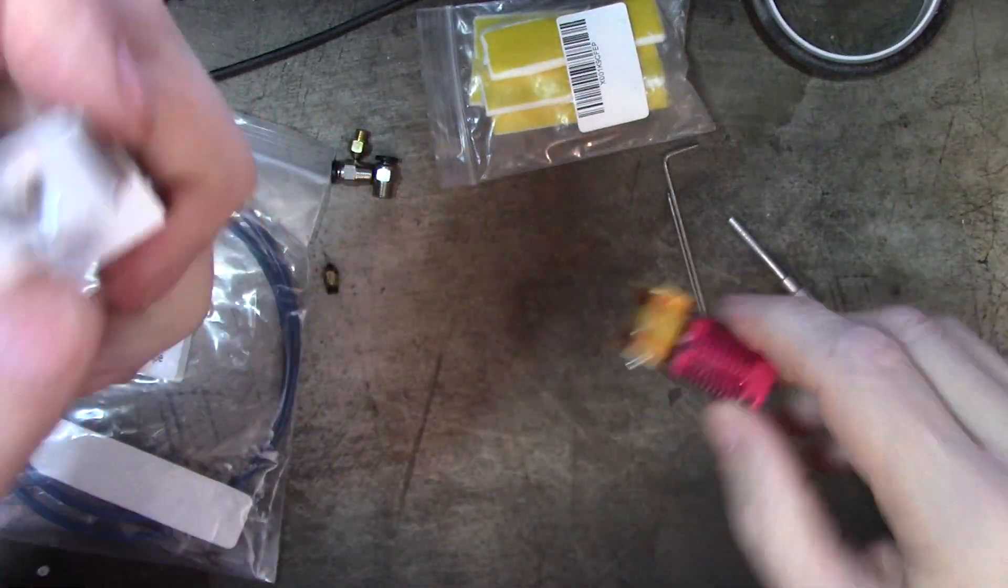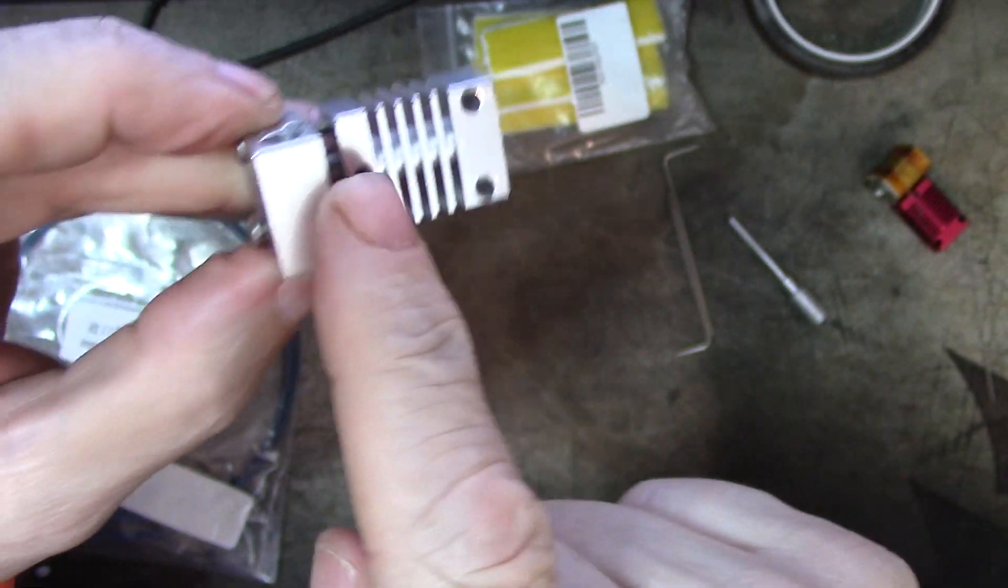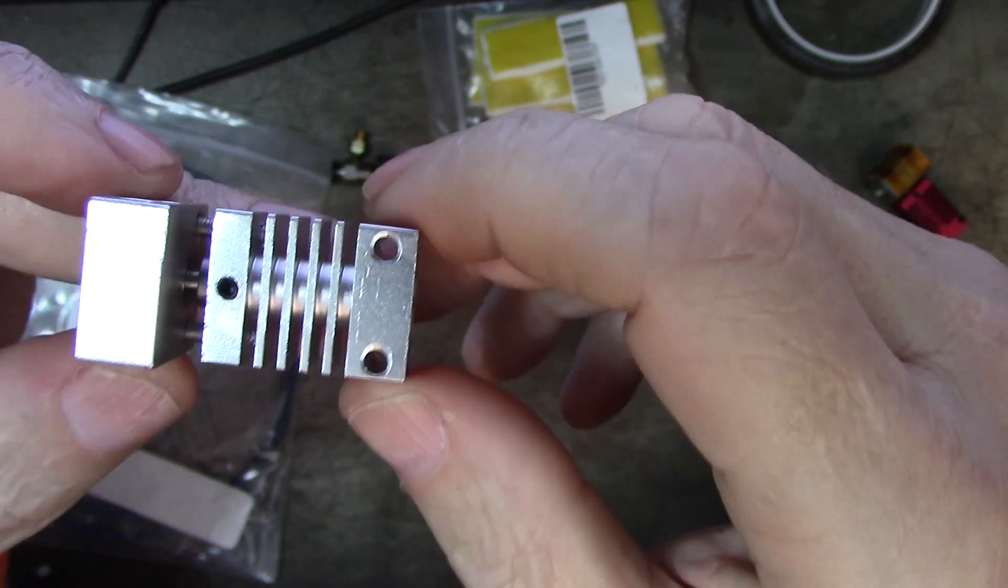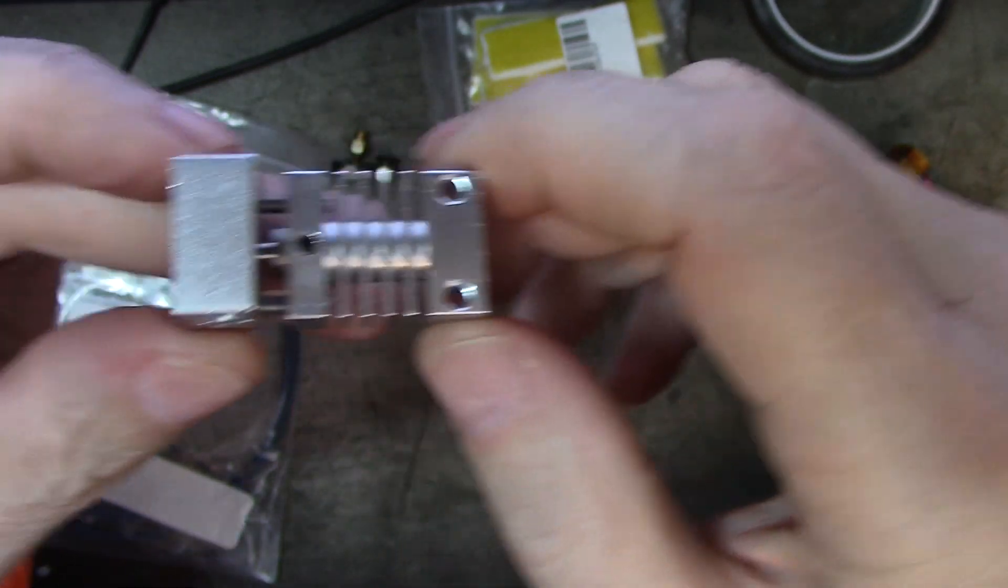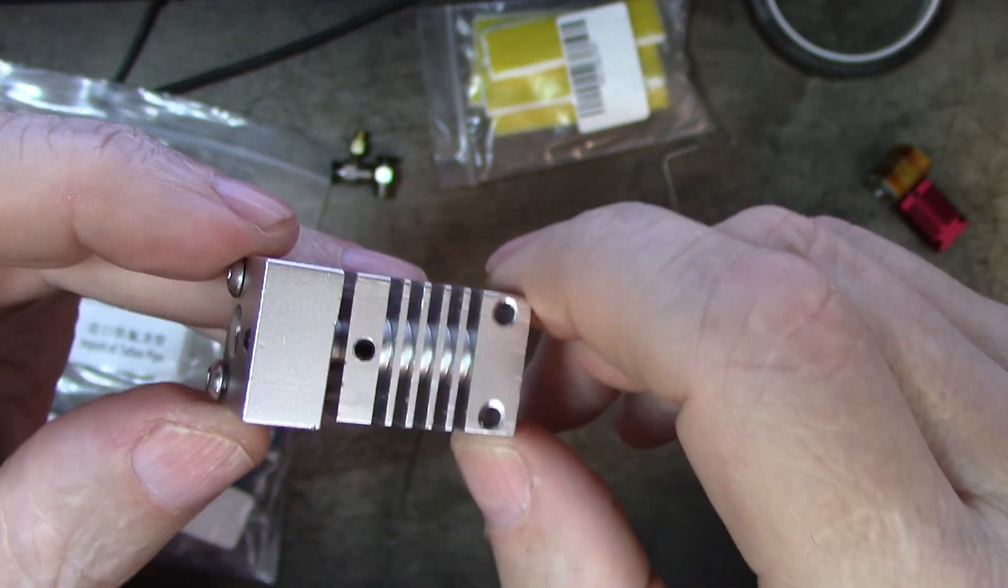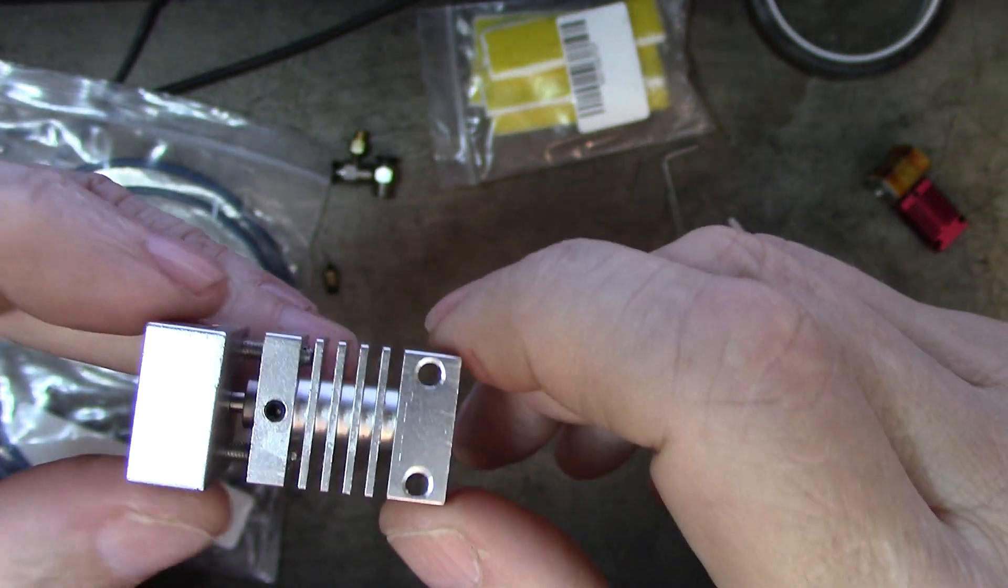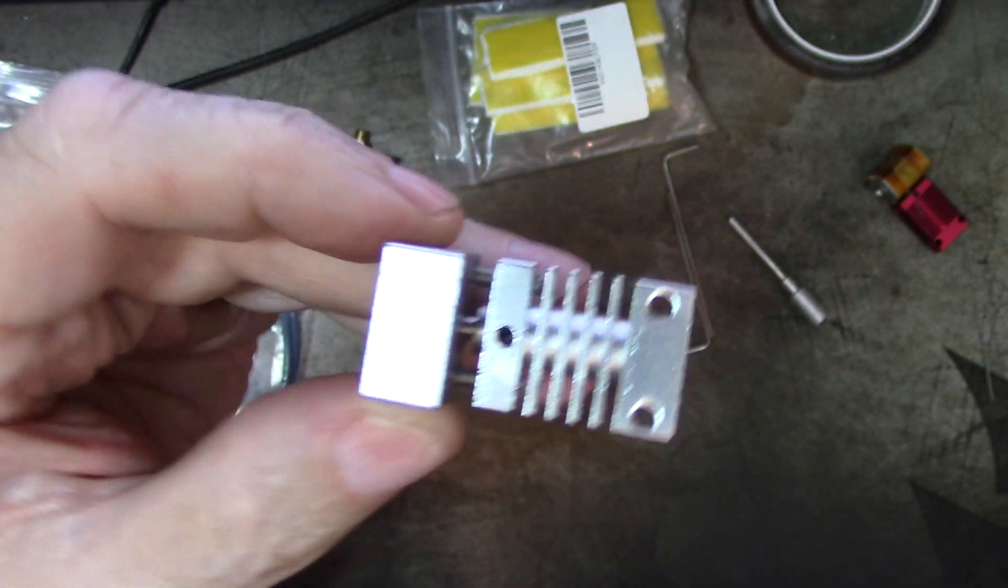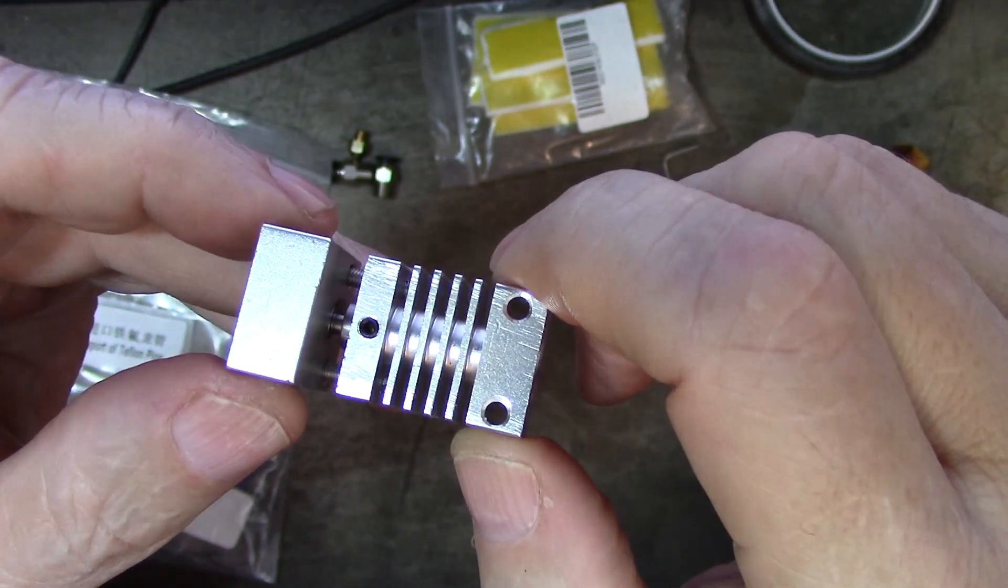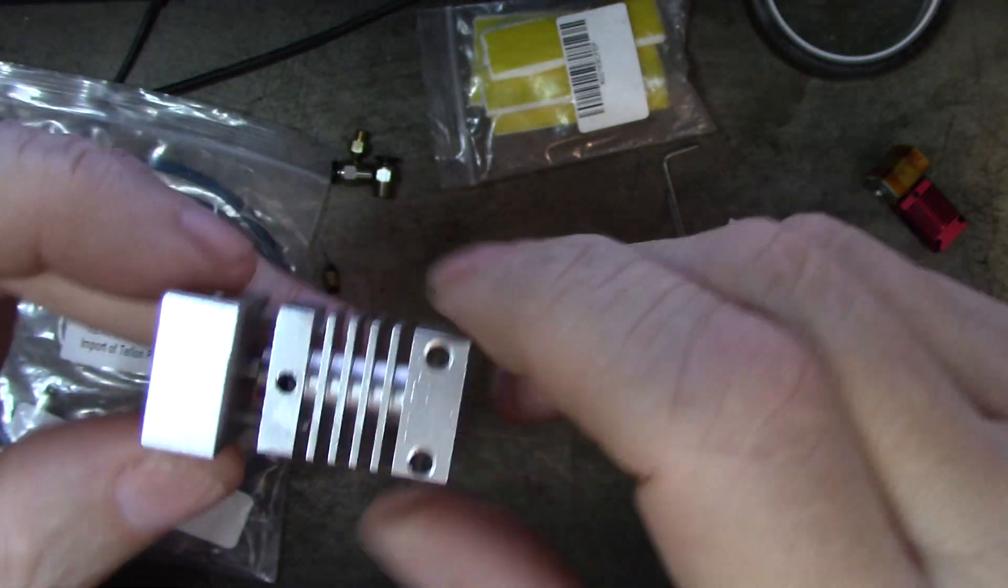So because this one does not have any Teflon tube down its full length, that means you don't have that super slick surface of the Teflon tube. When you retract into this, you're retracting into metal and not into Teflon tube, which is one of the reasons why you have to cut your retraction settings way, way down, or you have to use an oiler to try and get that filament slick enough where it can be retracted that distance without jamming.